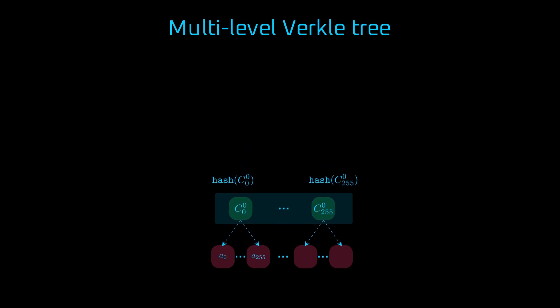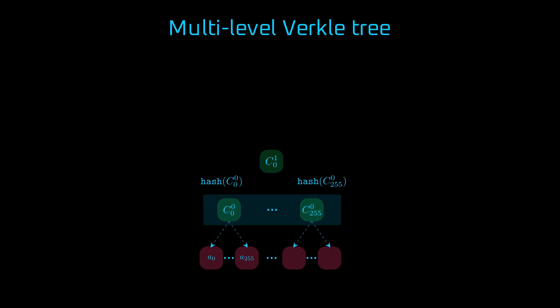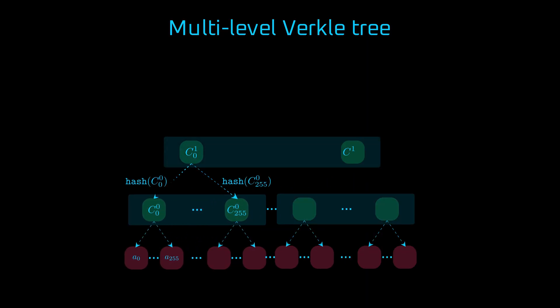We commit to these hashes with a new parent commitment. And again, there will be a full internal node, which holds 256 such commitments, each corresponding to 256 children commitments below it. Finally, we produce a single root commitment by committing to 256 truncated children hashes. This is the final parent node of our verkle tree.